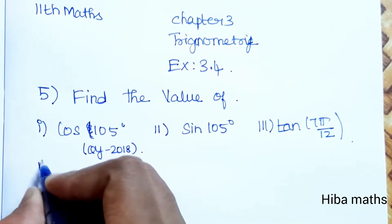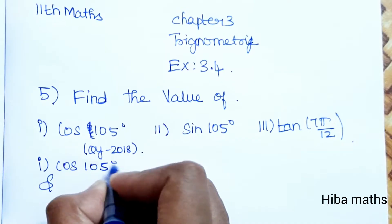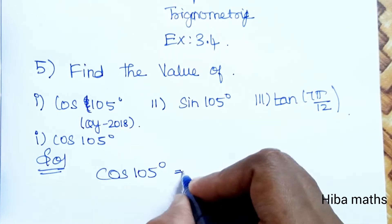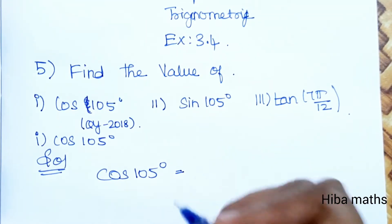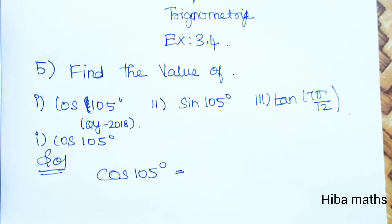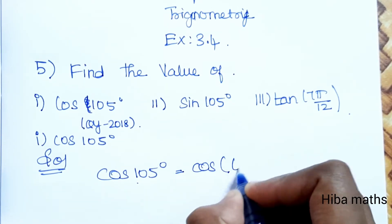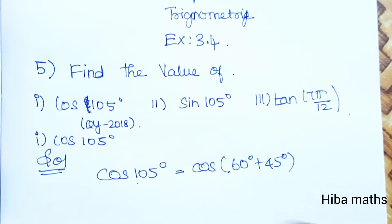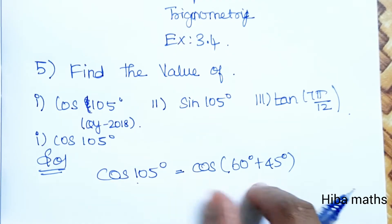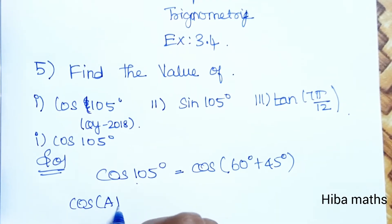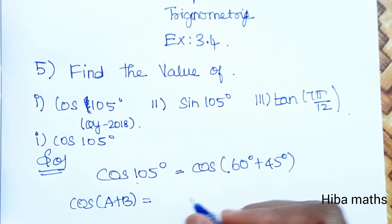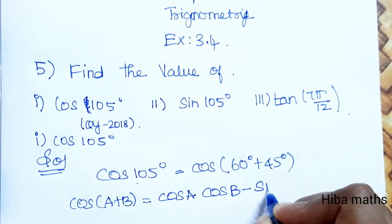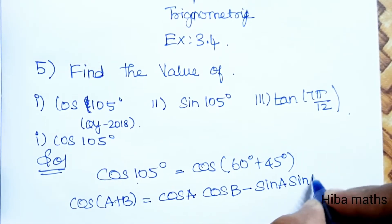First, solve cos 105 degree. We split the angle using trigonometric values from the standard table — for example, cos 105 degree equals cos(60 + 45) degree. Now, what is the formula for cos(a + b)?